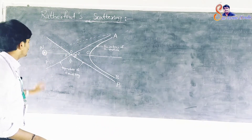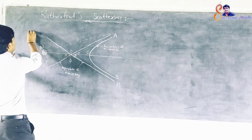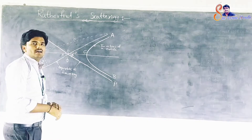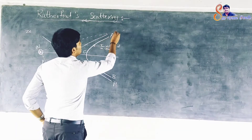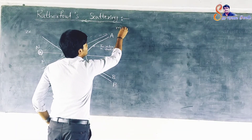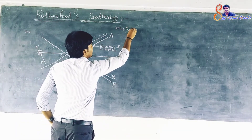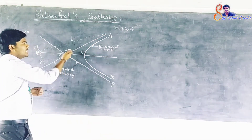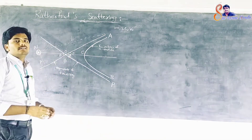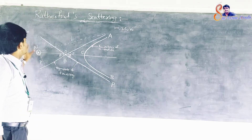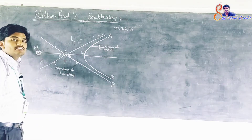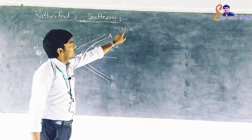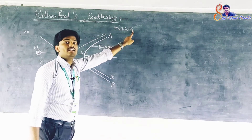Consider a nucleus of charge Ze, where Z is the atomic number, and an alpha particle of mass M, charge 2e, velocity V₀ approaching along the direction AO as shown in the figure. So the nucleus has charge Ze and the alpha particle has mass M, charge 2e, velocity V₀.